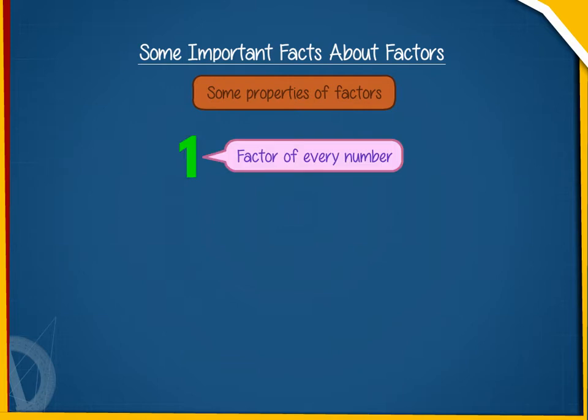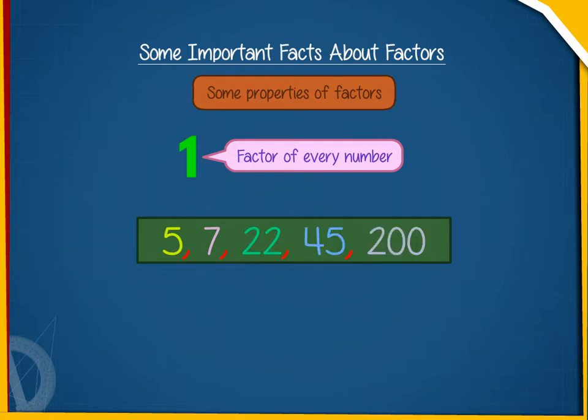For example, if we take any number like 5, 7, 22, 45, or 200, each number has 1 as a factor because each number is exactly divisible by 1.